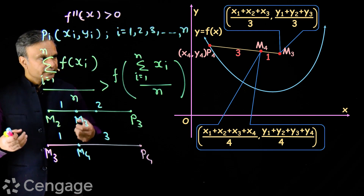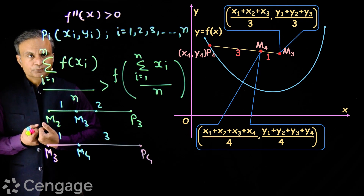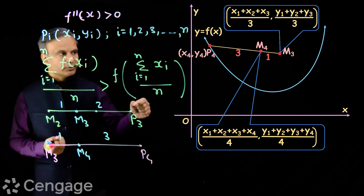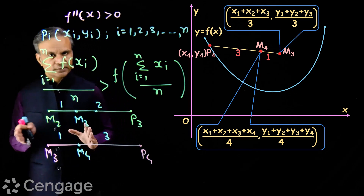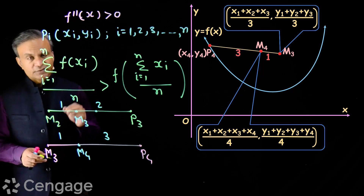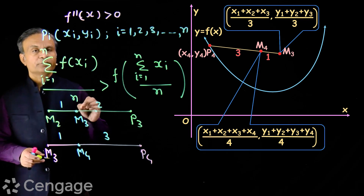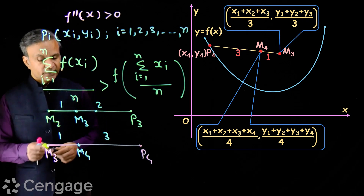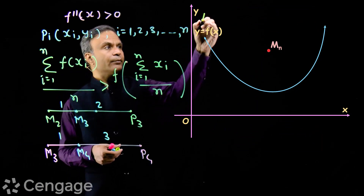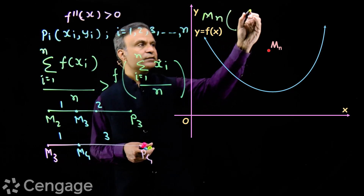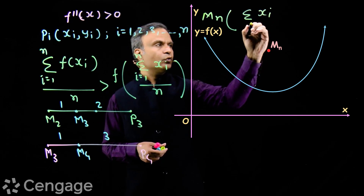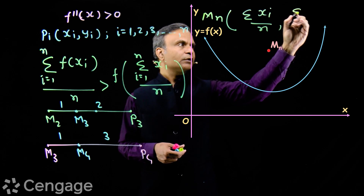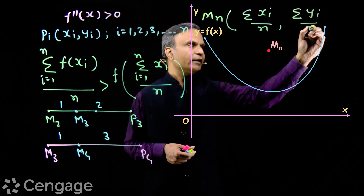The coordinates of M4 will be ((x1 + x2 + x3 + x4)/4, (y1 + y2 + y3 + y4)/4). So we are getting the mean of points — M4 is the mean of the 4 points P1, P2, P3 and P4. In a similar way we involve points P5, P6 up to Pn. With respect to the last point Pn we get point Mn having coordinates (Σxi/n, Σyi/n), where i is moving from 1 to n. This is the mean of n points P1, P2, P3 up to Pn.